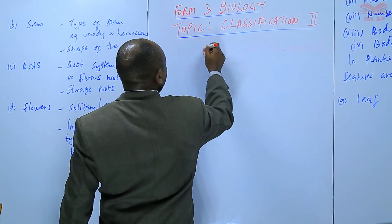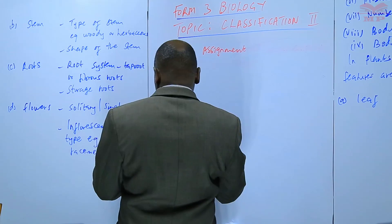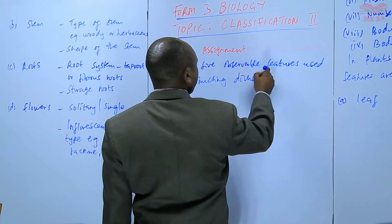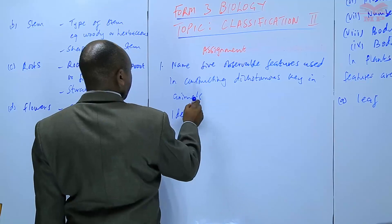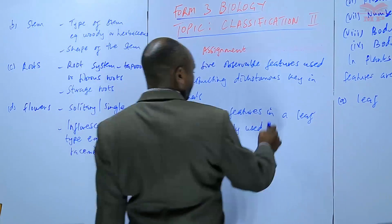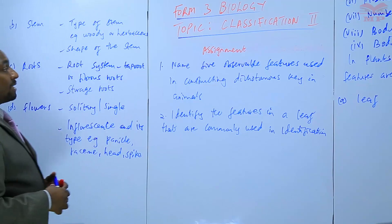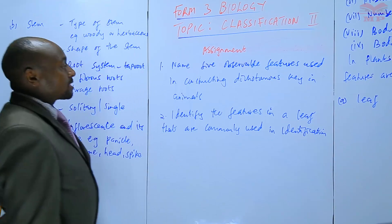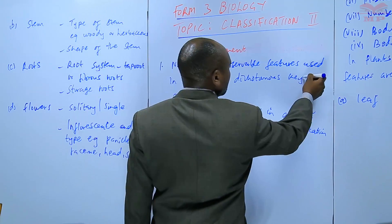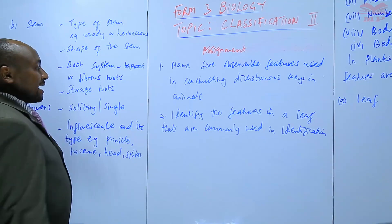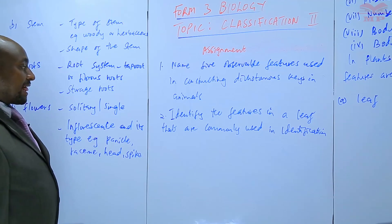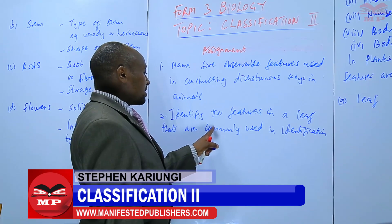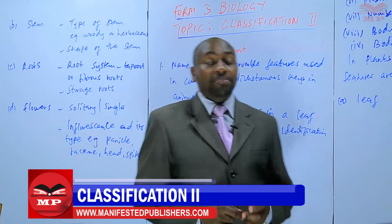The assignment for today's lesson: Question one — name five observable features used in constructing dichotomous keys in animals. Question two — identify the features in a leaf that are commonly used in identification. We will stop there until next time. Goodbye.